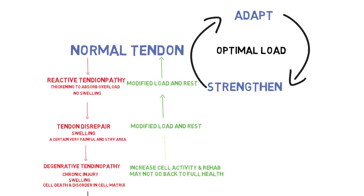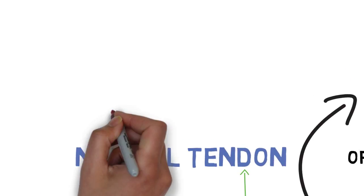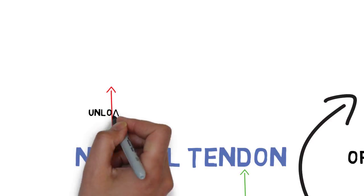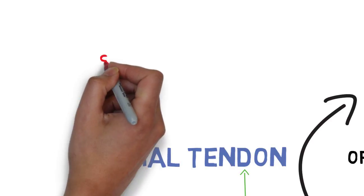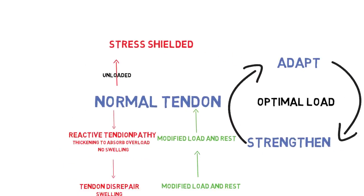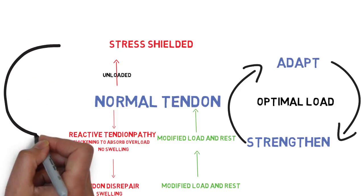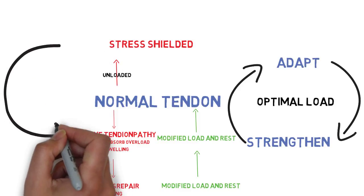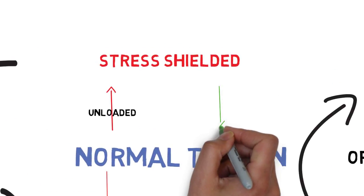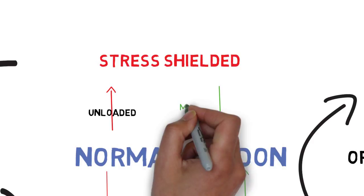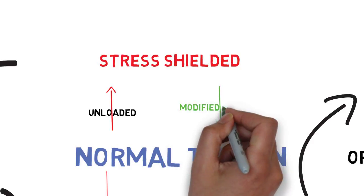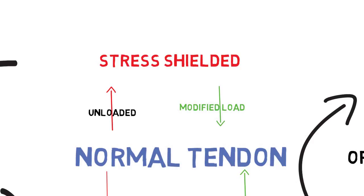At the other end of the continuum, this paper suggests that a totally unloaded tendon can become stress shielded. Then, when you go back to your normal activity, the tendon goes straight to a reactive tendinopathy and you start to get pain. You'd need to build back up to the point where you were before the pain started coming on.